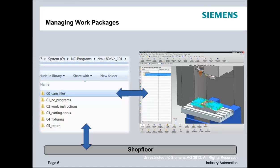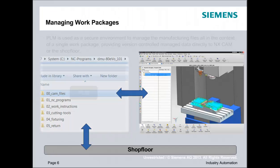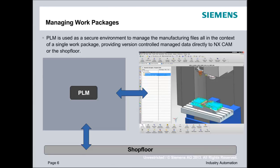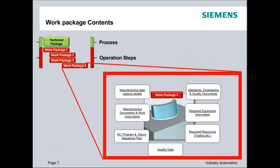On the next slide, you can see that the contents of the NC program, or the CAM file, will be stored in a database for usage. Before we can download the data to the shop floor — meaning to the NC machine — we need to go and store the content in the PLM system. We cannot store that content in a folder structure on your hard drive.